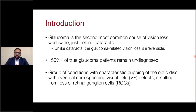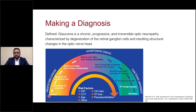Glaucoma is one of the leading causes of vision loss worldwide, just behind cataracts. But unlike cataracts, it leads to irreversible vision loss, and about 50% of individuals with true glaucoma are walking around undiagnosed. Glaucoma is defined as a chronically progressive and irreversible optic neuropathy characterized by degeneration of the retinal ganglion cells and resulting structural changes to the optic nerve head. We start with asymptomatic disease at the cellular level, which cascades to retinal nerve fiber layer changes visible on clinical examination, eventually leading to functional impairment or blindness.